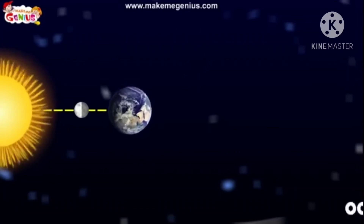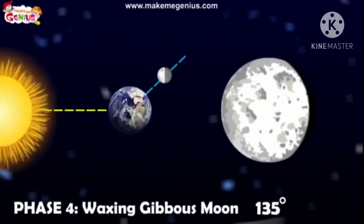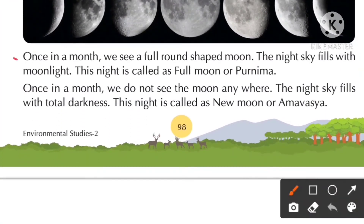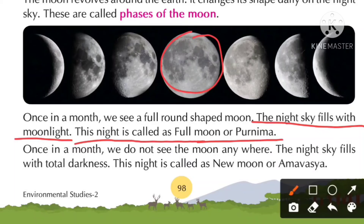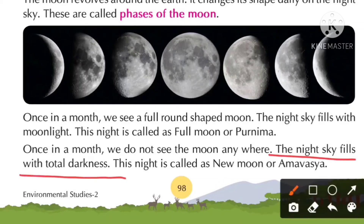Phase 1 is called the new moon. In this phase, we cannot see any part of the illuminated half of the moon. Phase 5 is the full moon. Once in a month, we see a full round-shaped moon and the night sky fills with moonlight. This night is called the full moon, or Purnima.